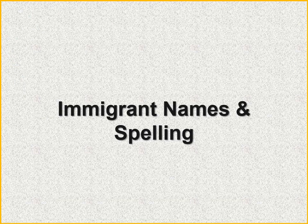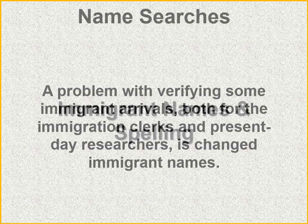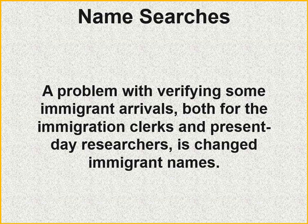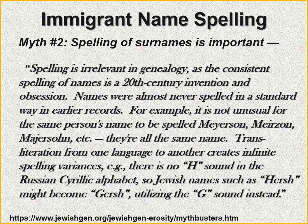Problems with immigration forms aren't always about names, but immigrant names and spellings can complicate the process. JewishGen addresses this in their ten myths — Myth Two: spelling of surnames is important. They say no — spelling is irrelevant in genealogy. Names are not irrelevant, but spelling is, as consistent spelling is a 20th-century invention. Names were almost never spelled in a standard way. For example, transliteration from one language creates infinite spelling variances: there is no H sound in the Russian Cyrillic alphabet, so Jewish names such as Hersch might become Gersh.